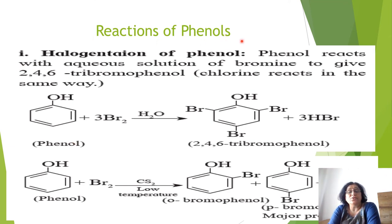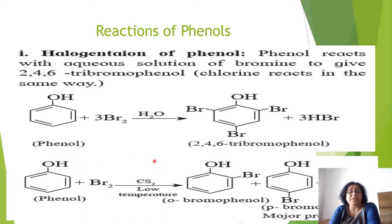Reactions of phenol — Halogenation: when phenol reacts with bromine water, 2,4,6-tribromophenol is formed (bromine attaches at ortho and para positions). When phenol reacts with bromine in CS₂, CCl₄, or chloroform at low temperature, ortho-bromophenol and para-bromophenol are both formed; para-bromophenol is the major product because it is more stable, symmetrical, and has less steric hindrance.